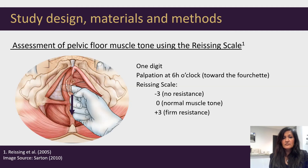Pelvic floor muscle tone was assessed intravaginally with one finger using the rising scale. The physiotherapist palpated the levator ani towards the posterior fourchette and designated a score between minus 3 and plus 3.